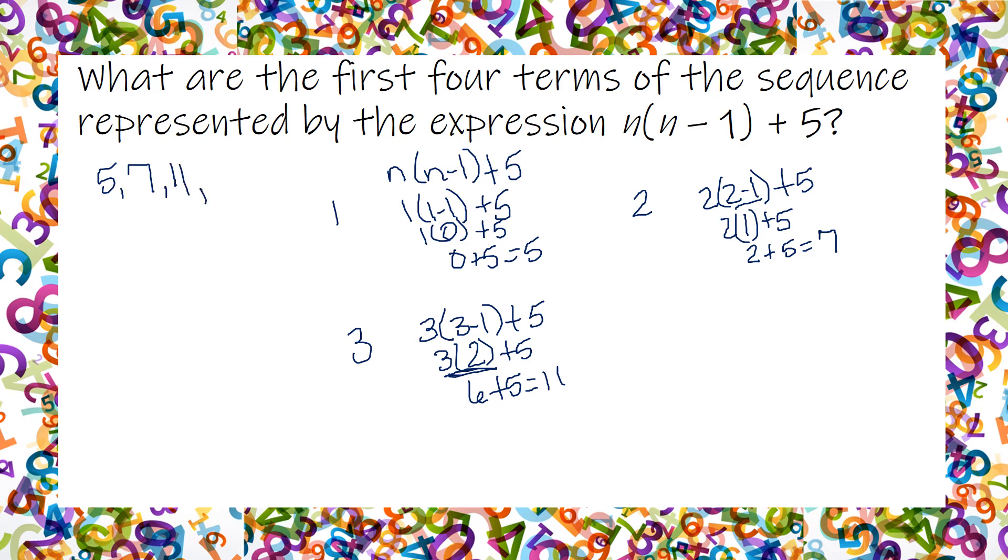Now I'm going to add the fourth term. So I'm going to say 4 times 4 minus 1 plus 5. 4 minus 1 is 3. 4 times 3 is 12. Plus 5 is 17. So there is my first four terms in that sequence.